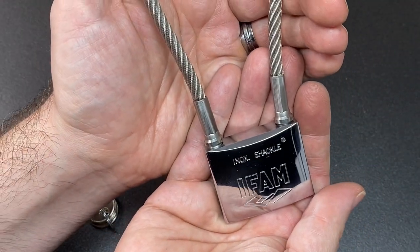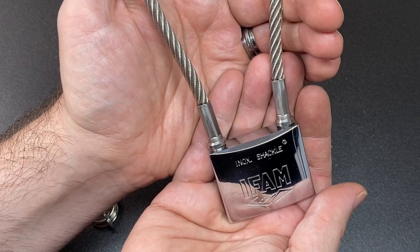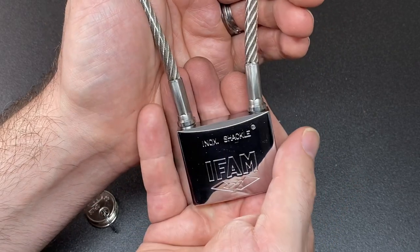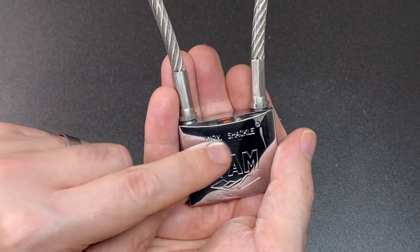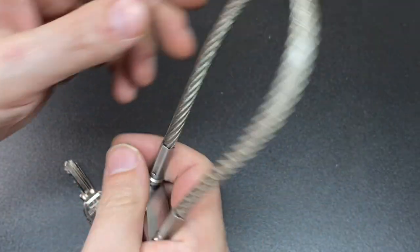iFAM are normally great locks to pick anyway just because they have lots of spools and great feedback, all that kind of stuff. It says INOX shackle, which means that this shackle is also, I believe, stainless steel.